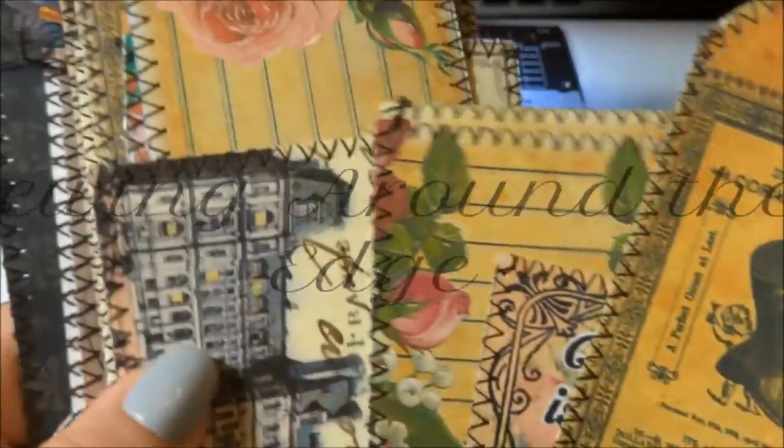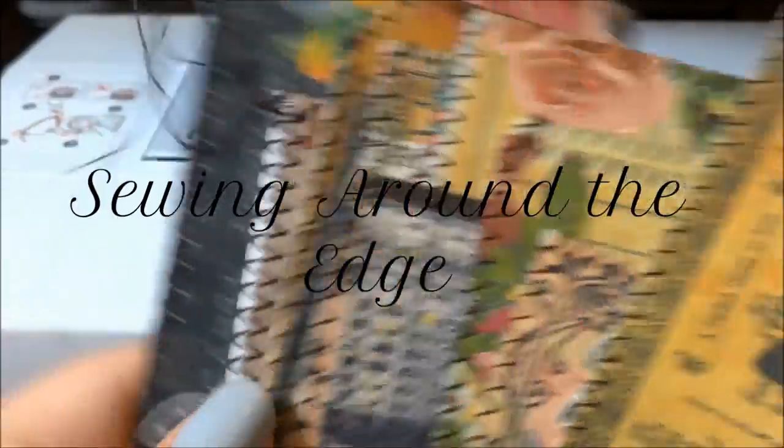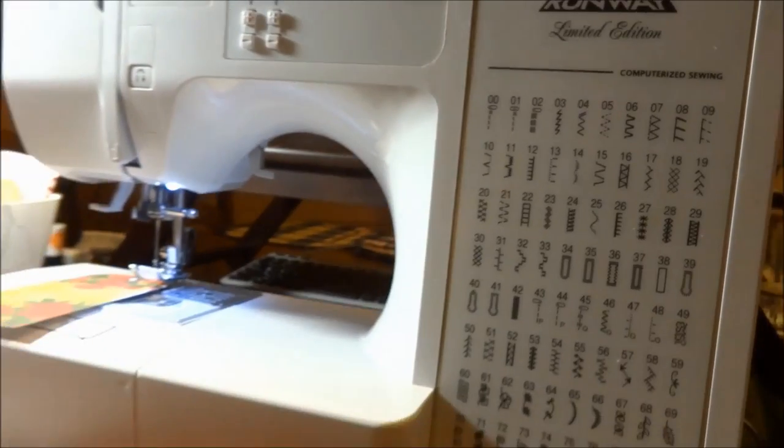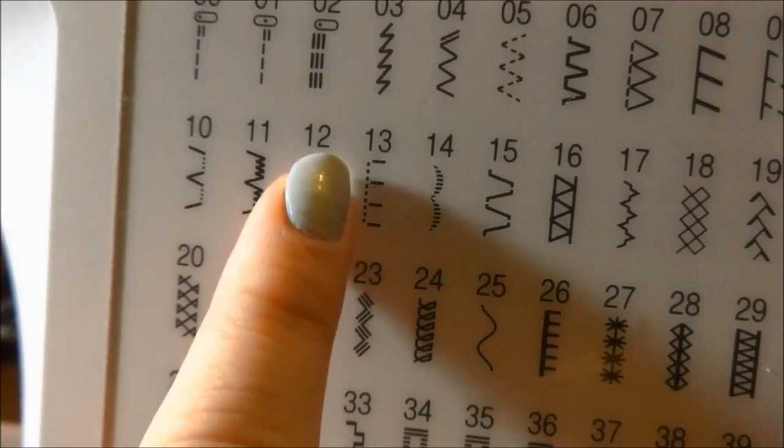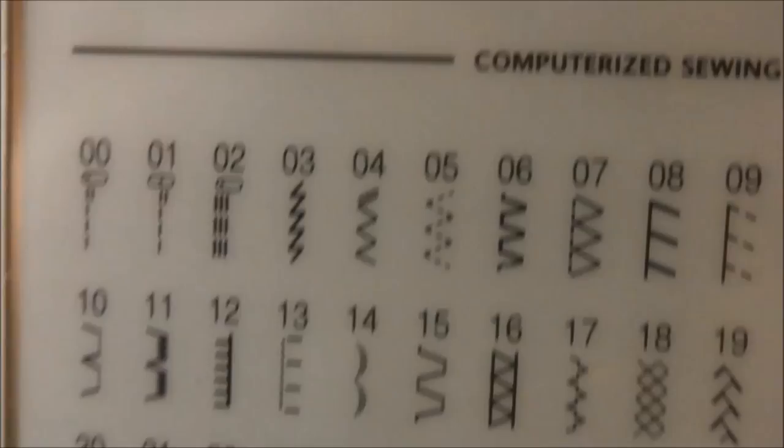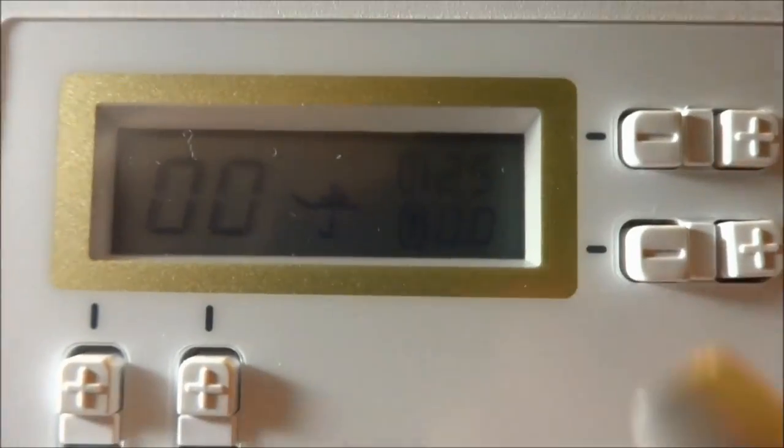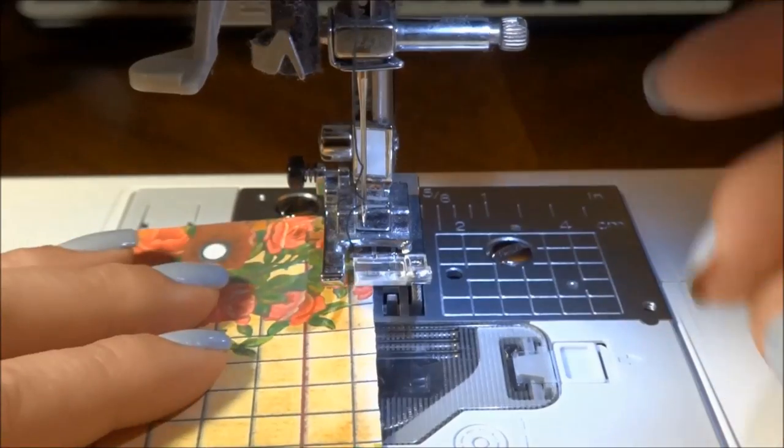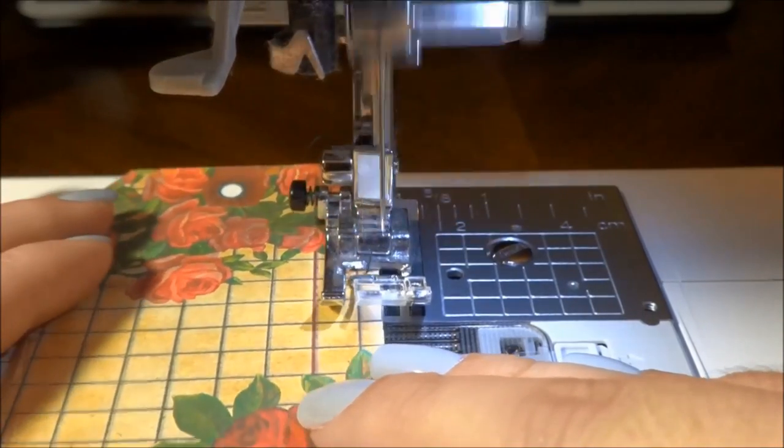So first we are going to talk about sewing around the edge and how I accomplished this look. It took me a while to figure this out. I watched a couple of videos on how to sew fabric, and it seems to be that the left hand side of the stitching is what's going to show on your paper and the right hand side is what is going to fall off the edge.